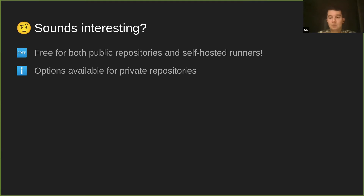Actions are free for public repositories and for your own self-hosted runners. If you have a public repository, you can just enable Actions. If you have a private repository and want the free offering, you can start your own server as a self-hosted runner. If you have neither, you currently get 2,000 minutes per user per month for free, and beyond that you can pay a modest amount.